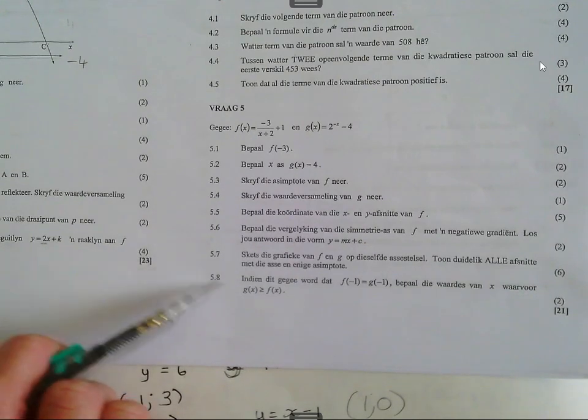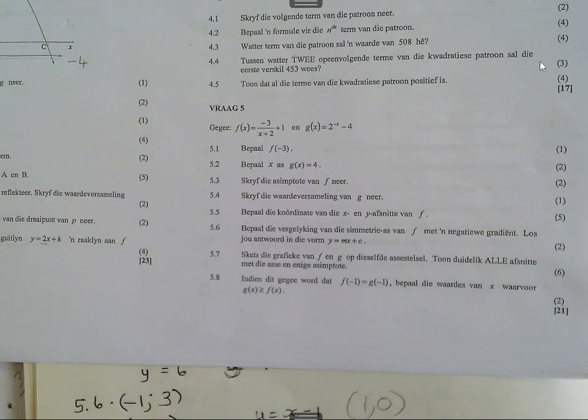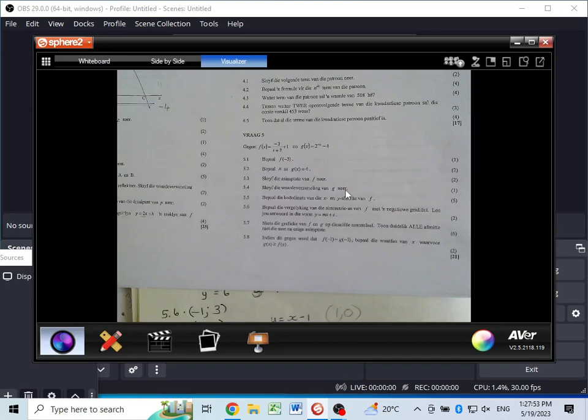Altyd jou, jou laaste vraag of jou laaste 2 vraagies is die wat nou ek jy jou kan uitdoek. Dis dan dit, julle het nou nog baie tyd. Julle kan versjeker vraag 6 klaar maak nou nog in die taas.